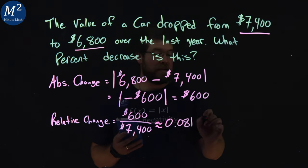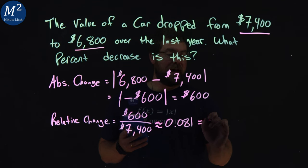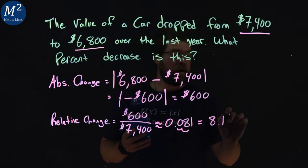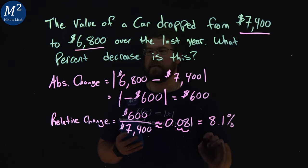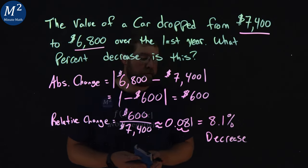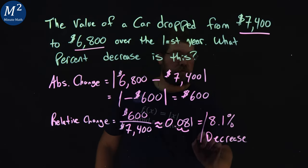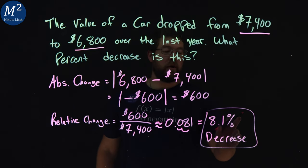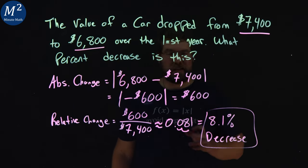And so if I want to write this as a percent, we move the decimal two spots to the right, we have an 8.1% decrease. And it's an approximate percent. So our answer here for dropping $600 on that car price, we saw an 8.1% decrease.